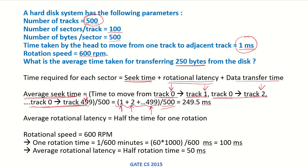This is an arithmetic series, and adding and dividing by 500 gives us an average seek time of 249.5 milliseconds. The average rotational latency is half the time for one full rotation. The rotational speed is 600 RPM, so one rotation takes 1/600 minutes, which converts to 100 milliseconds. Therefore, the average rotational latency is 50 milliseconds.